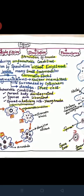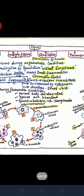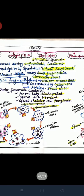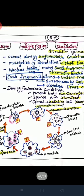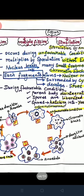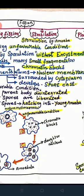Example: amoeba. Sporulation occurs during unfavorable conditions. In this method, amoeba multiplies by sporulation without encystation.